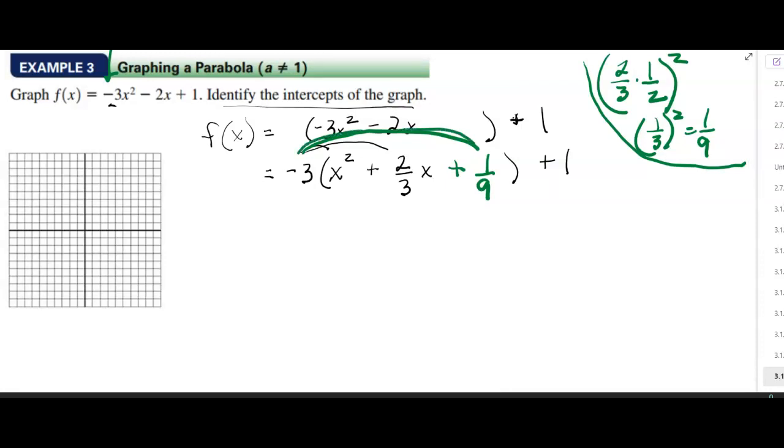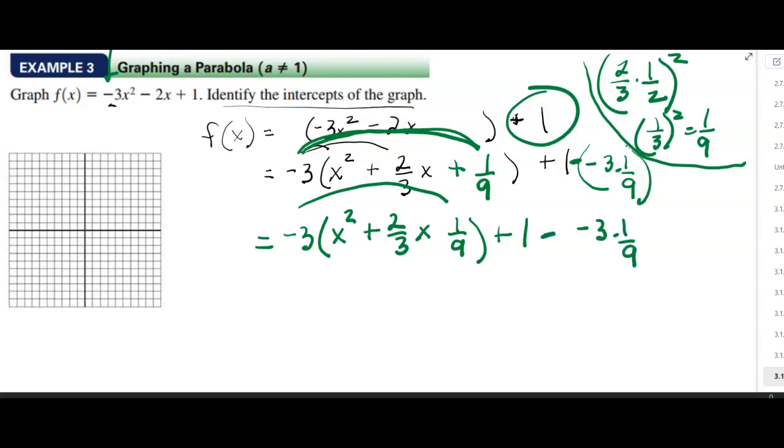You have negative 3 times 1 ninth. So I'll write negative 3 times 1 ninth. But you have to do the opposite of that. So I'll subtract it. So I added the 1 ninth. And that'll all work out because you'd have negative 3 times 1 ninth, and then here you'd have positive 3 times 1 ninth.